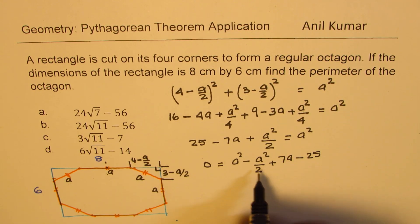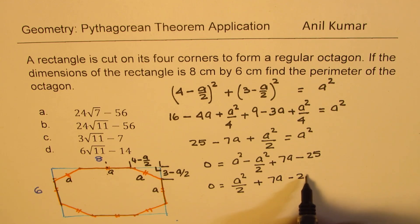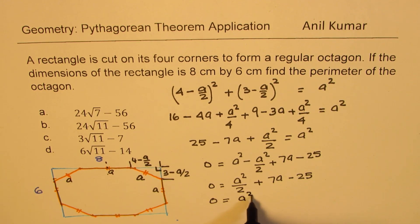So we get this as A square minus A square by 2 plus 7A minus 25. So this is like A square by 2. So it is A square by 2 plus 7A minus 25. Multiplying by 2, we get 0 equals A square. We'll just double each number. 7 times 2 is 14, so we get 14A minus 50.